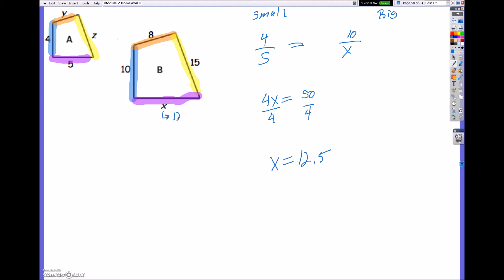So we just solve for this one. Now we're going to continue the process to solve for y and z. So I can do the same thing. I'm going to have 4 over y. This is the blue over orange. It's going to equal, on the big one, blue over orange. So that would be 10 over 8. So now when I cross multiply, I'm going to have 32, because 8 times 4 is 32, is equal to 10y. And when I divide both sides by 10, I'm going to get y is equal to 3.2.